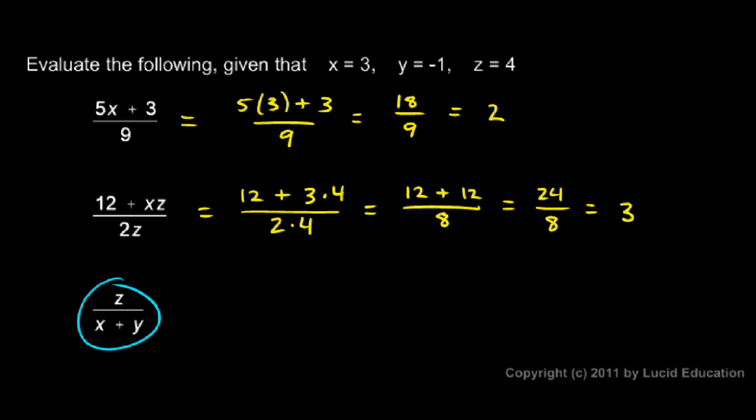Okay, next example: z over x minus y. Let's rewrite it, but instead of z, I write 4, instead of x, I write 3, and instead of y, I write negative 1. So I have 4 over 3 plus negative 1. Let's keep the 4 up top and think about this 3 plus negative 1. That's the same as 3 minus 1, which is 2, so I have 4 over 2, which is simply 2.